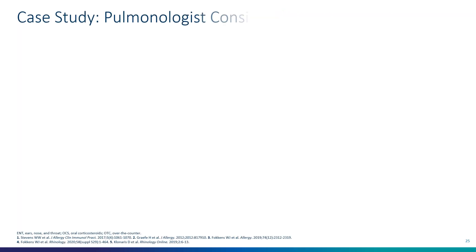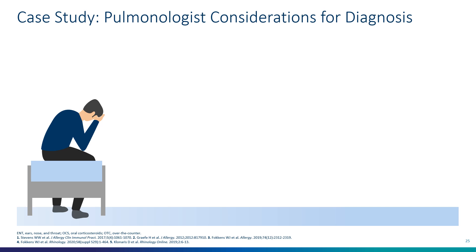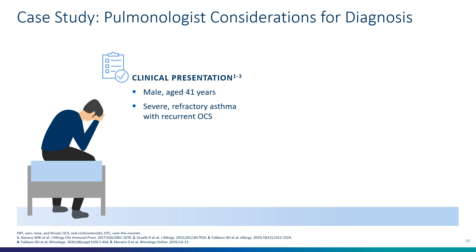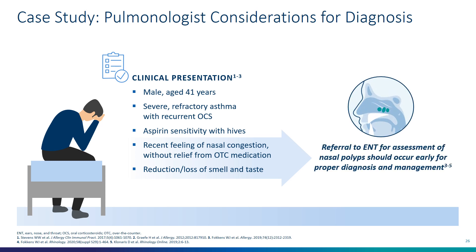A case study illustrates the pulmonologist's considerations for diagnosis. The case is a 41-year-old male with severe refractory asthma and recurrent oral corticosteroid use. Importantly, aspirin sensitivity had caused hives, and a recent feeling of nasal congestion without relief from over-the-counter medications leads to diminished quality of life. Loss of smell and taste further impacts functional status. At that point, the pulmonologist needs the expertise of other specialists — in my practice, we work closely with ENT physicians to assess nasal polyps and make an early diagnosis to affect management.